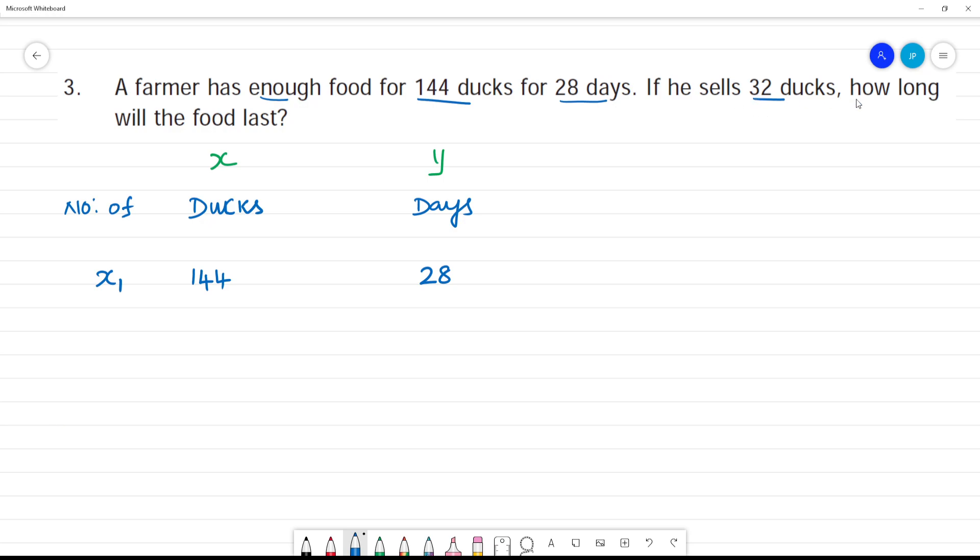If he sells 32 ducks, what do we say? Total ducks - first number is 144 ducks. So he sold how many ducks? 32 ducks. What do we say? Subtract. So 4 minus 2 is 2, 4 minus 3 is 1.